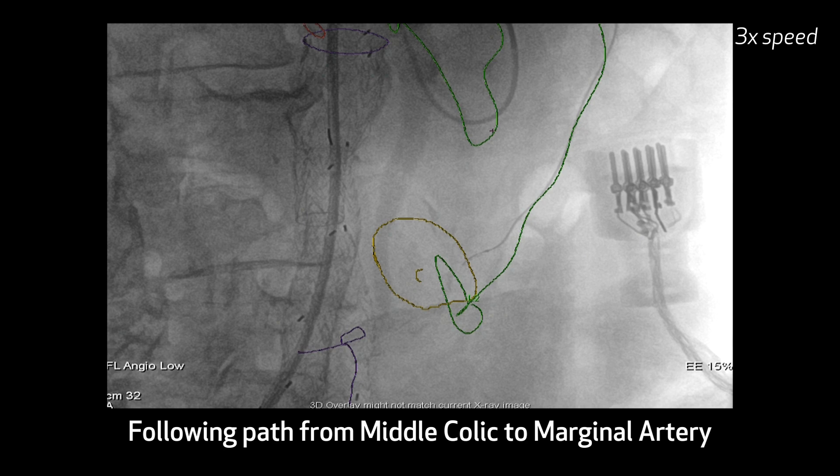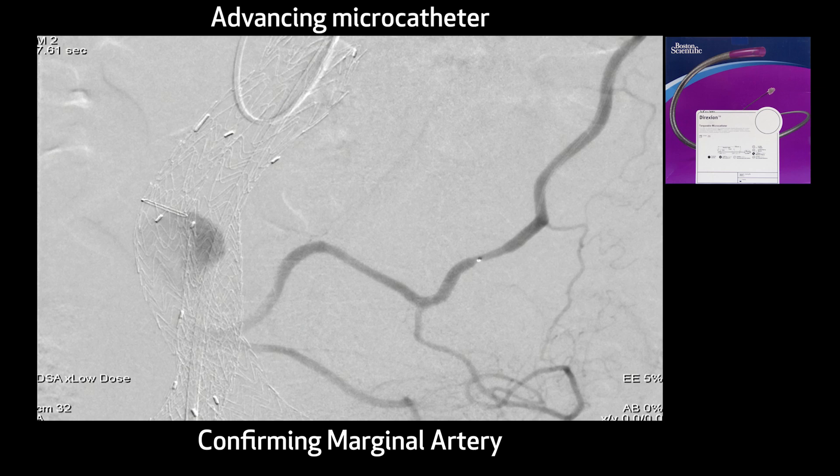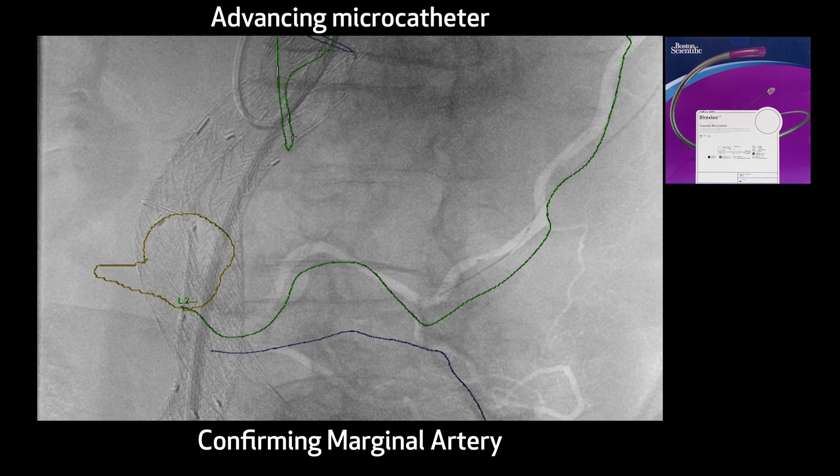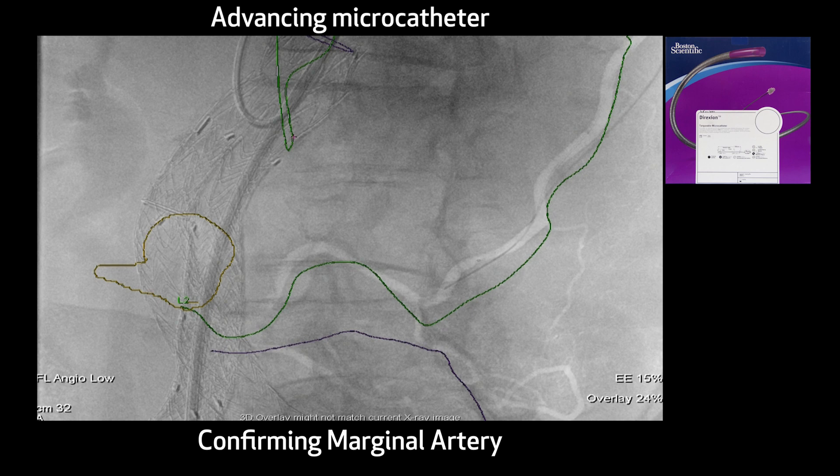Here we are now, and we changed the angle throughout this so that we can optimize where the various different side branches come off, so we know whether or not we're engaging them. Again, you can see these side branches. We're going to advance the microcatheter with its wire towards the yellow, which is where we've drawn in the endoleak cavity inside the aneurysm.